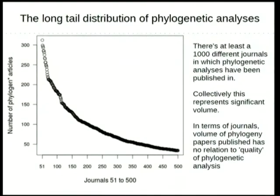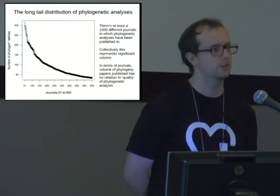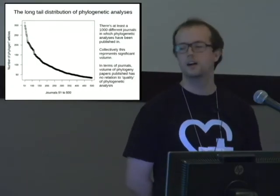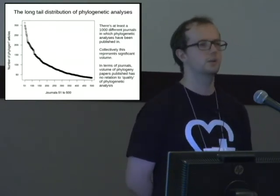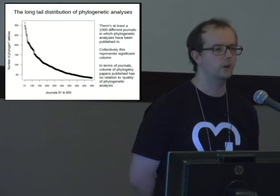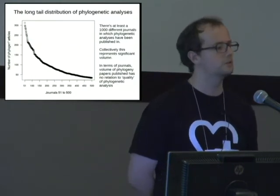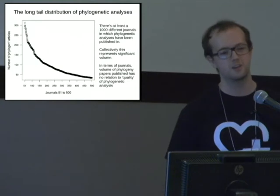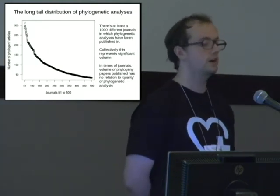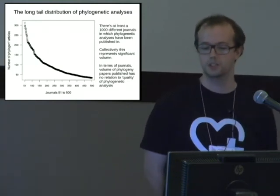There's also a huge long tail of journals. It would be very convenient if everything was published in one or two journals across three or four publishers, but it's not. Unfortunately, there are publishers that are extremely popular with scientists but publish in PDF only — no HTML, no XML, no text mining — and a lot of phylogenetic trees and useful data gets published there.